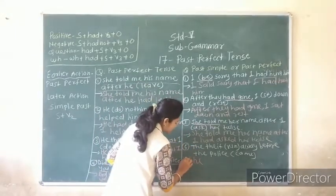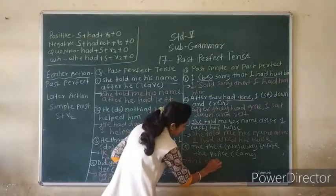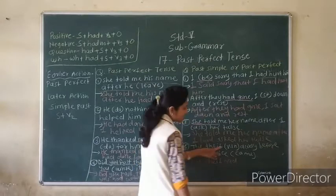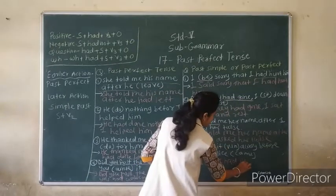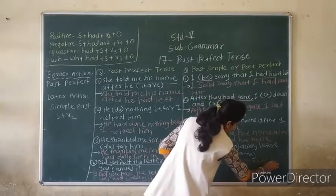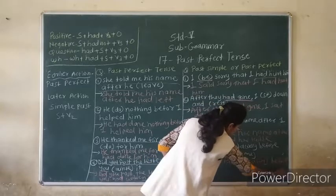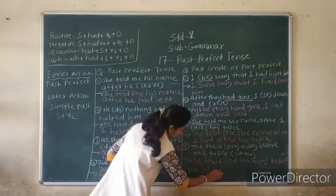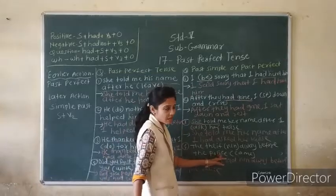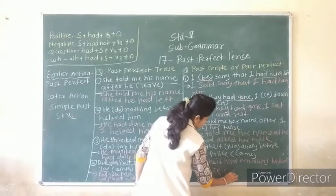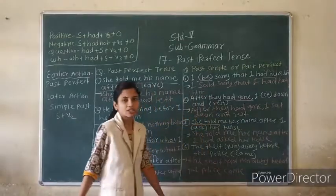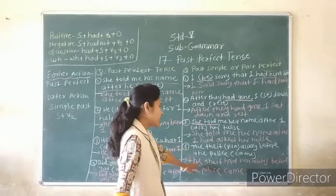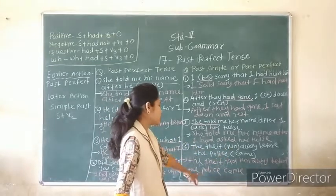The thief — earlier action — use Past Perfect: 'The thief had run away.' Before the police — latter action — use Simple Past: 'The police came.' Answer: 'The thief had run away before the police came.'